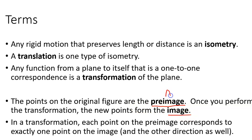Sometimes we might call a point on the preimage A, and we would name the corresponding point on the new image A prime — that little tick mark means that point is related to the original one. Something happened, but there is some sort of correspondence between that original point and that new point. Each point in the preimage corresponds to exactly one point on the image, and the other direction as well.